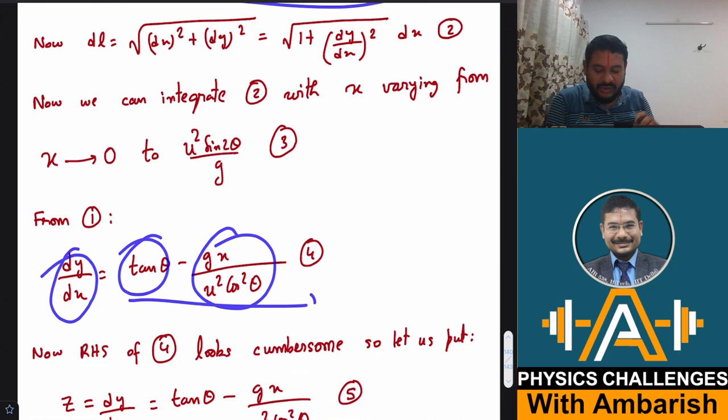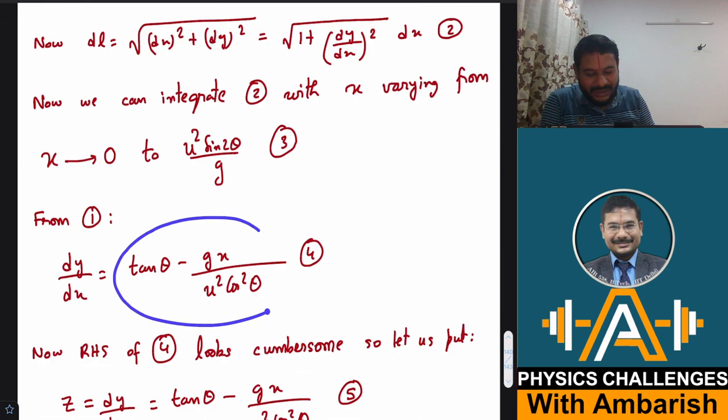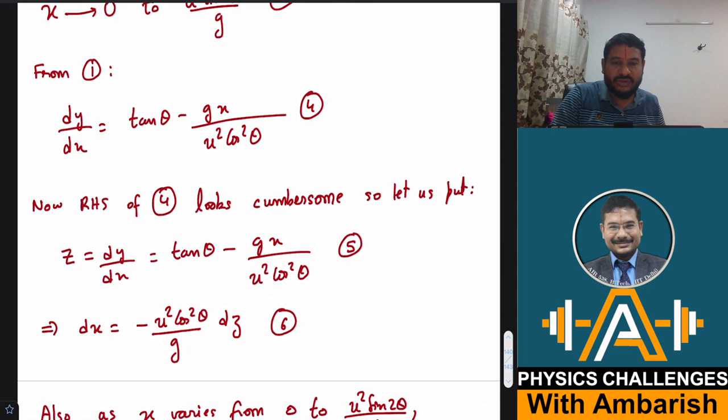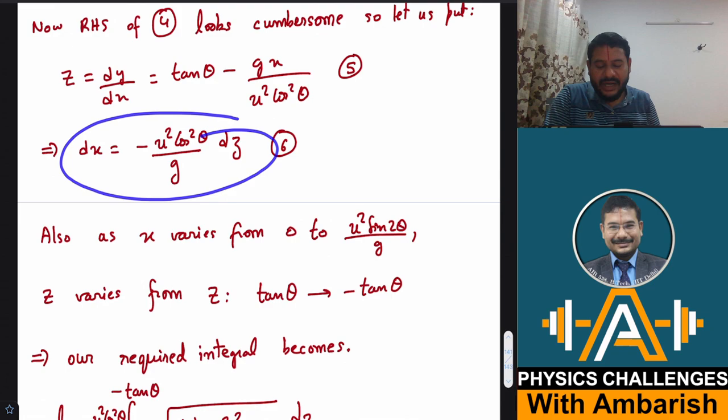So now what happens, if you make its whole square it will be a cumbersome long term. So instead of integrating this directly let me put this as z. So I put z equal to dy by dx, so dy by dx that is z is tan theta minus g x upon u square cos square theta. And therefore now if I substitute this I will also have to change the limits also and I have to convert dx into dz. So tan theta is of course a constant and dz then will be nothing but dx will be minus u square cos square theta by g times dz. Easily you can differentiate this to get the relation between z and dz and dx. So this is what you get. And I also need to change the integration limits.